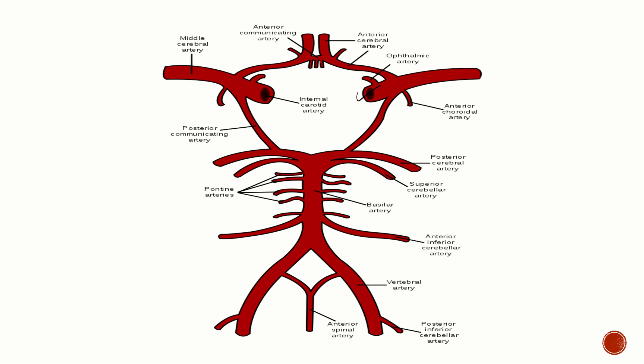This is the internal carotid artery, which is going to give the middle cerebral artery, and the other branch is going to be your anterior cerebral artery. Both ACAs are going to be connected by your anterior communicating artery — that is your ACOM.